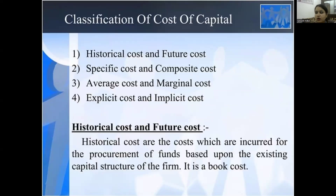Classifications of the cost of capital: historical cost and future cost; specific cost and composite cost; average cost and marginal cost; and explicit cost. Historical costs are the costs incurred at the procurement of funds and are based upon the existing capital structure of the firm. It is a book cost.